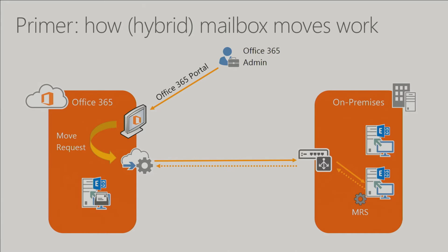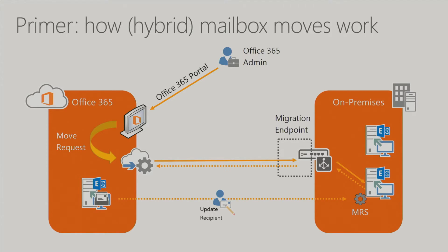In Exchange there are two types of mailbox moves: a push move and a pull move. The move to Office 365 is a pull move — it's not your on-premises environment connecting to Office 365, it's the other way around. That's one of the reasons why you need a public third-party certificate on the endpoint facing the internet through which you're going to migrate mailboxes. Once the mailbox is moved to Office 365, the recipient is changed from a mailbox user to a mail-enabled user to allow coexistence.